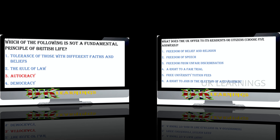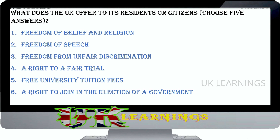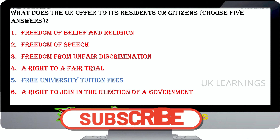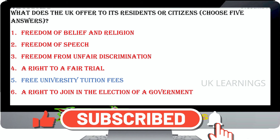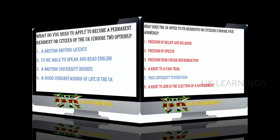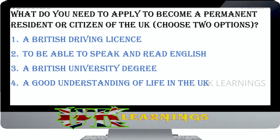What does the UK offer to its residents or citizens? Choose five answers: freedom of belief and religion, freedom of speech, freedom from unfair discrimination, a right to a fair trial, free university tuition fees, a right to join in the election of a government. The correct answers are: freedom of belief and religion, freedom of speech, freedom from unfair discrimination, a right to a fair trial, and the right to join in the election of a government.